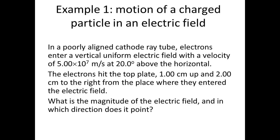Let's do a first example for the motion of a charged particle in an electric field. In a poorly aligned cathode ray tube, electrons enter a vertical uniform electric field with a velocity of 5 times 10 to the 7 meters per second at 20 degrees above the horizontal. The electrons hit the top plate 1 cm up and 2 cm to the right from the place where they entered the electric field. What is the magnitude of the electric field and in which direction does it point?